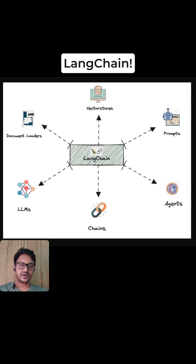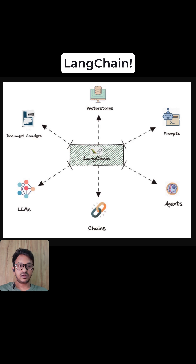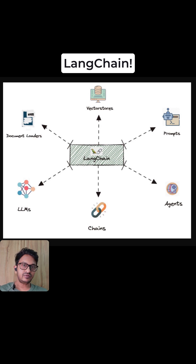There is also a memory component, where you can have long-term and short-term memory to store conversation history. There are also agents, which give LLMs access to tools. LangChain also has a tools component where you can make multiple API calls and use multiple tools like search, calculators, and APIs — providing a standardized interface for external systems. With all these components, you can chain together a lot of things and build powerful AI applications.